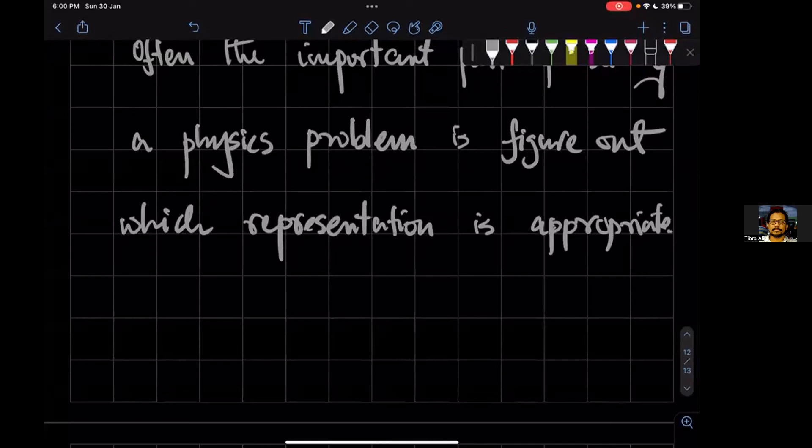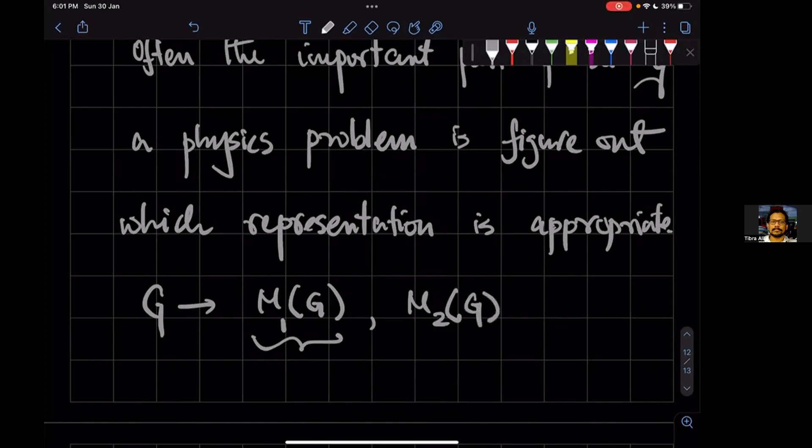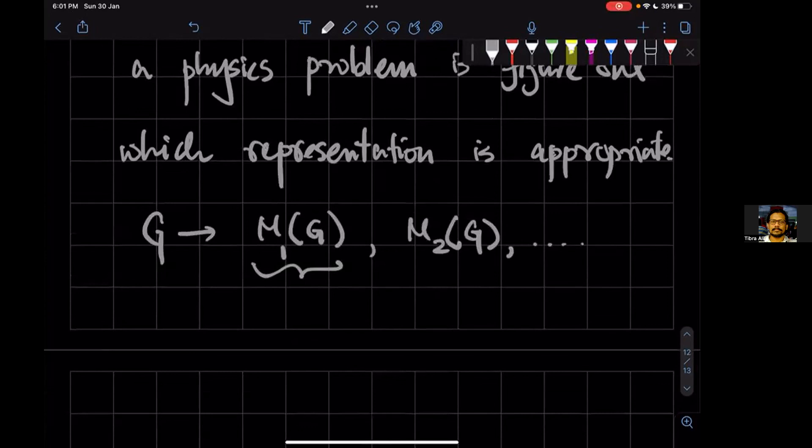Okay. So usually representation theory means that suppose you have a group and there will be an infinite number of representations in terms of matrices. So if you have some group, say G, and then you'll have a representation of this group, and let's call it represent M1 matrices - so this is a set of matrices - and there'll be another representation which is going to be M2. So in principle, every group has an infinite number of representations. Does that answer your question?